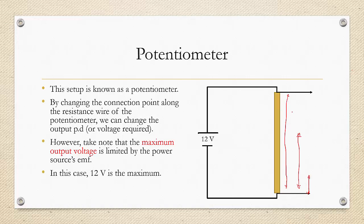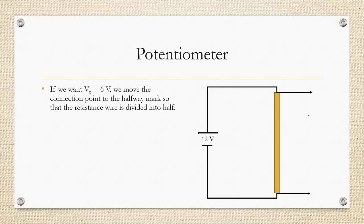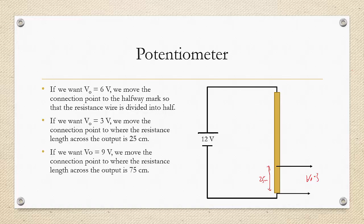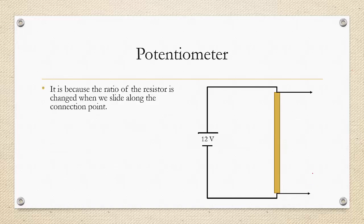If you want the voltage output to be 6 volts, just move the connection point to roughly the halfway mark. If you want 3 volts, move the connection point to where the resistance length across the output is 25 centimeters — since the entire wire is 100 centimeters, placing the connection point there gives 3 volts. If you want 9 volts, move the connection point to where the resistance length is 75 centimeters.